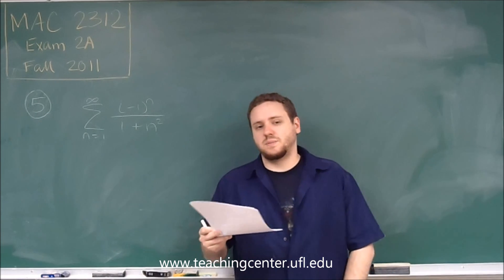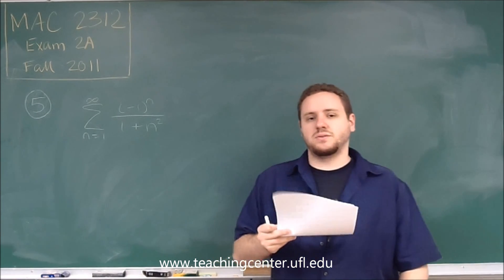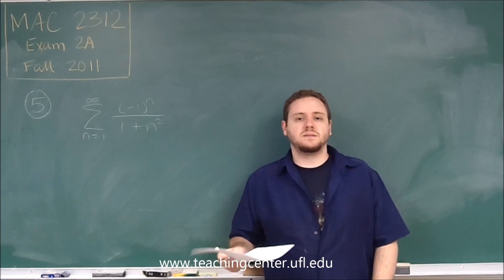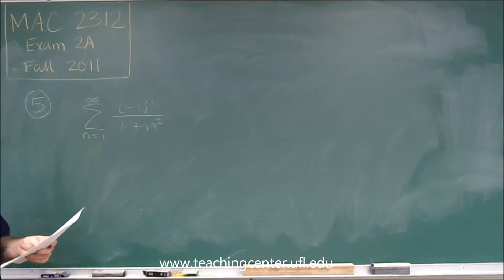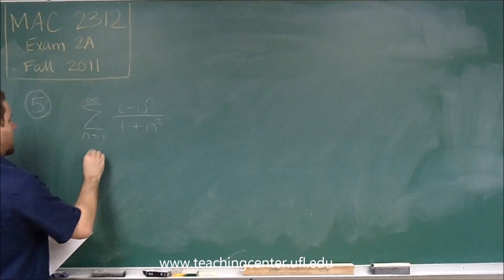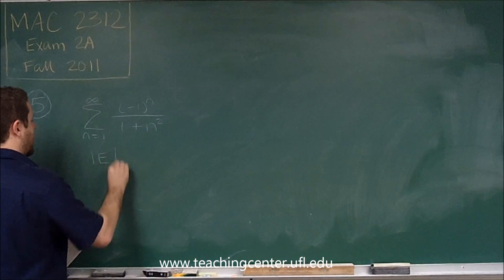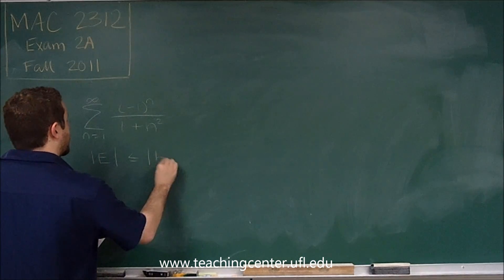Remember that the alternating series estimation theorem always says that the error is going to be less than or equal to the next term. I should say the absolute value of the error.